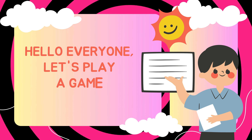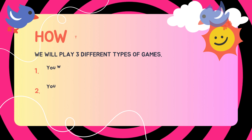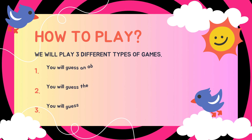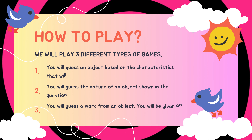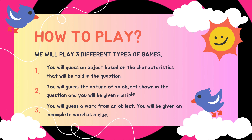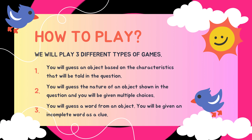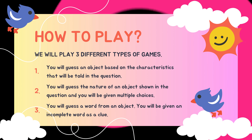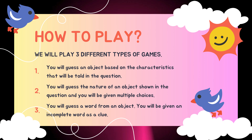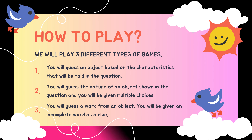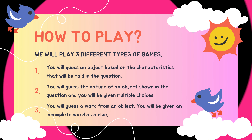Hello everyone! Let's play a game! How to play: We will play three different types of games. You will guess an object based on the characteristics that will be told in the question. You will guess the nature of an object shown in the question, and you will be given multiple choices. You will guess a word from an object, and you will be given an incomplete word as a clue.